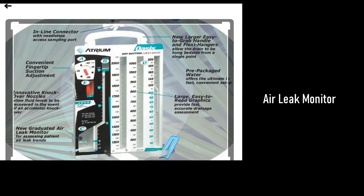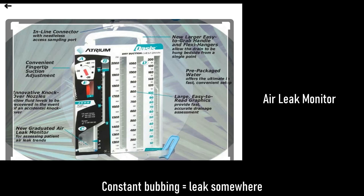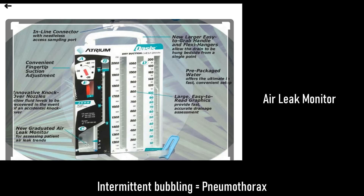Now, the air leak monitor at the bottom — look for bubbling here. If there is constant bubbling, that means there is a leak somewhere in the system; make sure the connections are well secured, tape them, and inform the physician. If there is intermittent bubbling, that is normal.